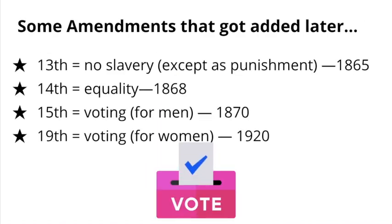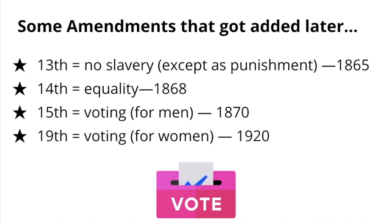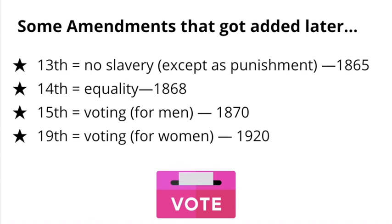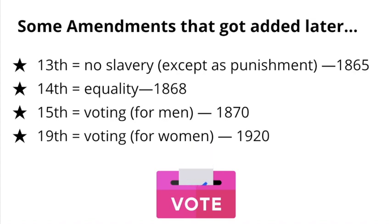However, some additional rights have been added to the Constitution over time with more amendments. Three of these amendments were added after the Civil War, when slavery finally became illegal. The 13th amendment abolished slavery, except as a punishment for someone convicted of a crime. The 14th amendment introduced the word "equal" into the Constitution and said the government has to treat all groups of people equally. The 15th amendment guaranteed men of all races the right to vote, and the 19th amendment extended that right to women.